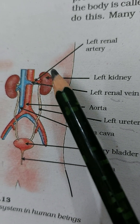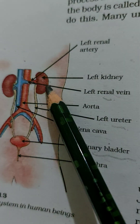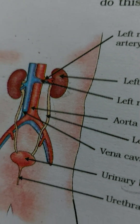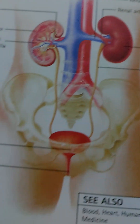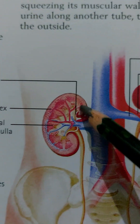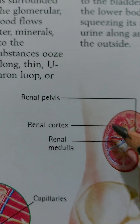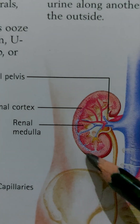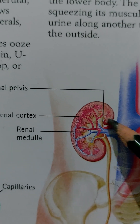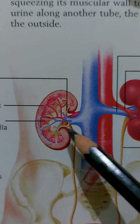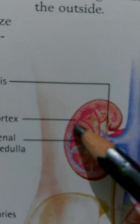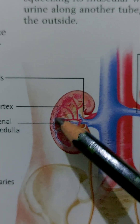Now let's understand the structure of the kidney. The kidney has two layers: the outer layer is the renal cortex, the inner layer is the renal medulla, and there is also the renal pelvis. In the renal cortex there are small like-structures. The functional units are called nephrons.